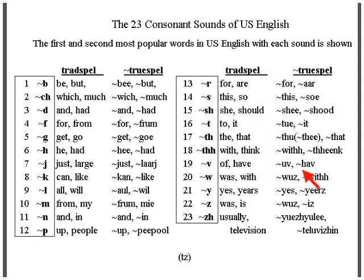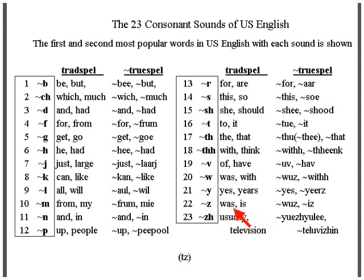The V sound, as in 'of' and 'have.' The W sound, spelled with a W, as in 'was' and 'with.' The Z sound — the most popular word 'was' is phonetically spelled with a Z, often represented in traditional spelling with an S. And here's a rare one — the rarest sound of English — the ZH sound, which you don't usually see spelled ZH, as in 'usually' and 'television.'